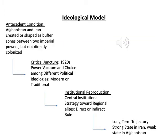Here you've got the path-dependent elements — you've got antecedent conditions. Both Afghanistan and Iran were created or shaped; their external boundaries were shaped by two imperial powers, Russia and Britain, who did not want to directly fight each other, so they created the boundaries of Iran and Afghanistan, although they did not directly colonize.